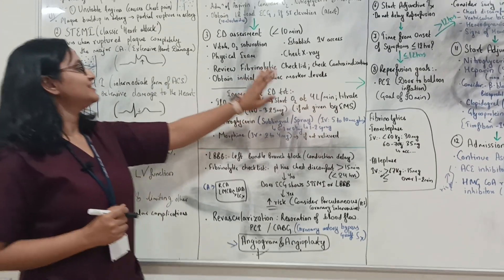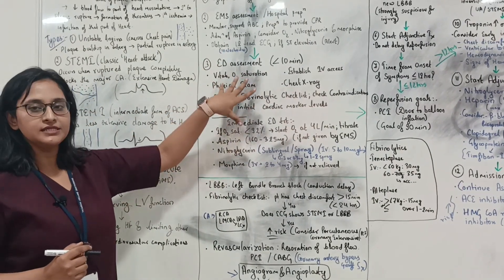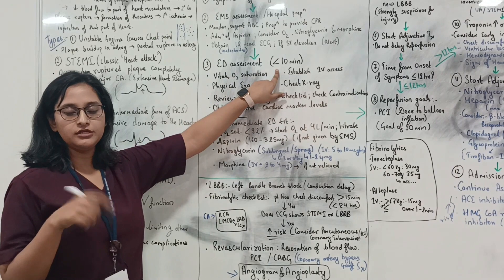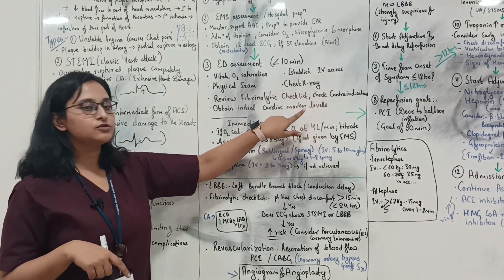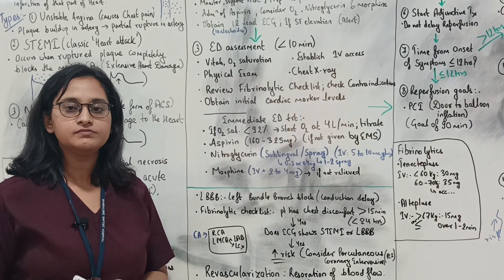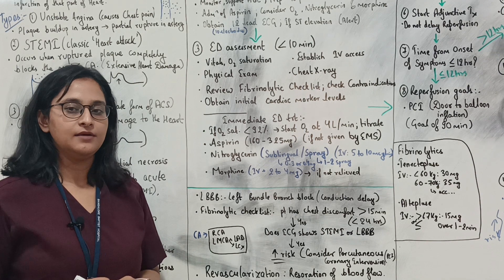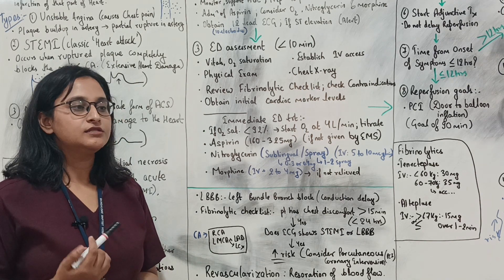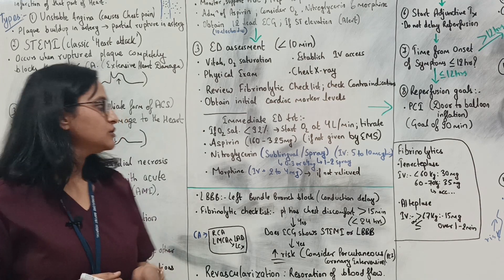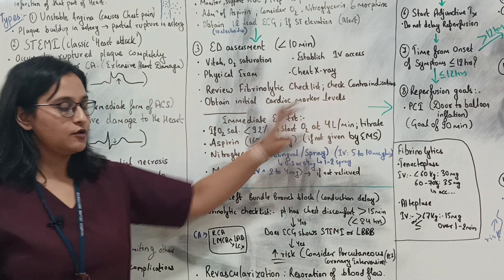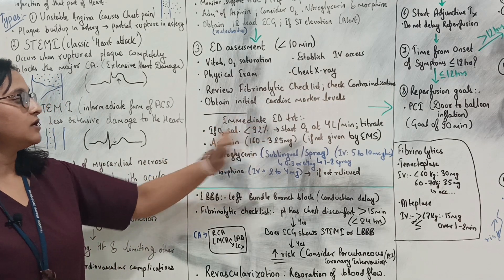Back to the fibrinolytic checklist — check for contraindications within the 10-minute time frame. Also obtain initial cardiac marker levels. The cardiac markers include myoglobin, cardiac troponin, and CKMB — a subtype of creatine kinase.